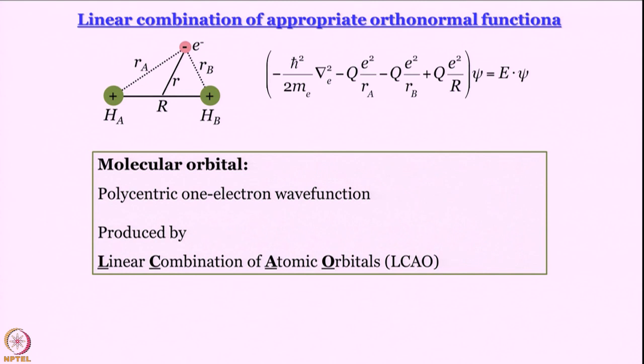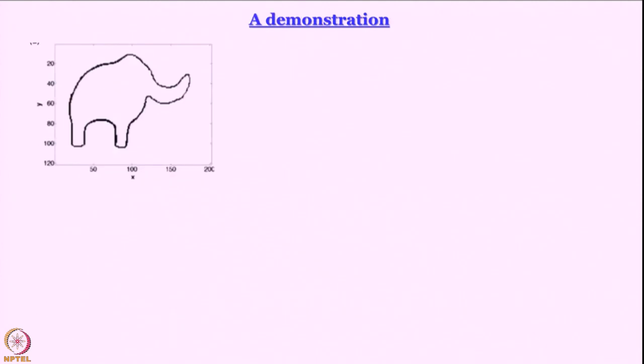Whenever I say this, students are usually not happy and they say you are giving some hand waving argument. And I agree with that. So let me take this a little further. This is the combination we are going to use: linear combination of two 1s wave functions, one for atom A, one for atom B.